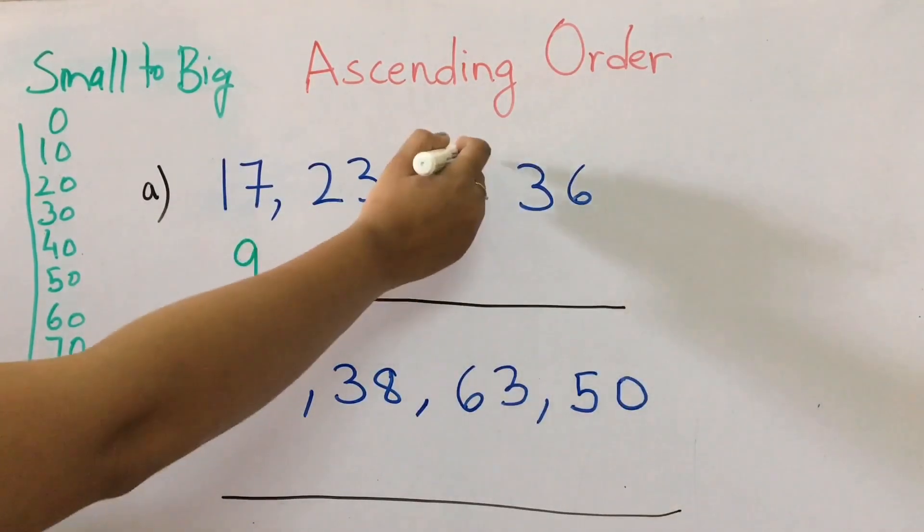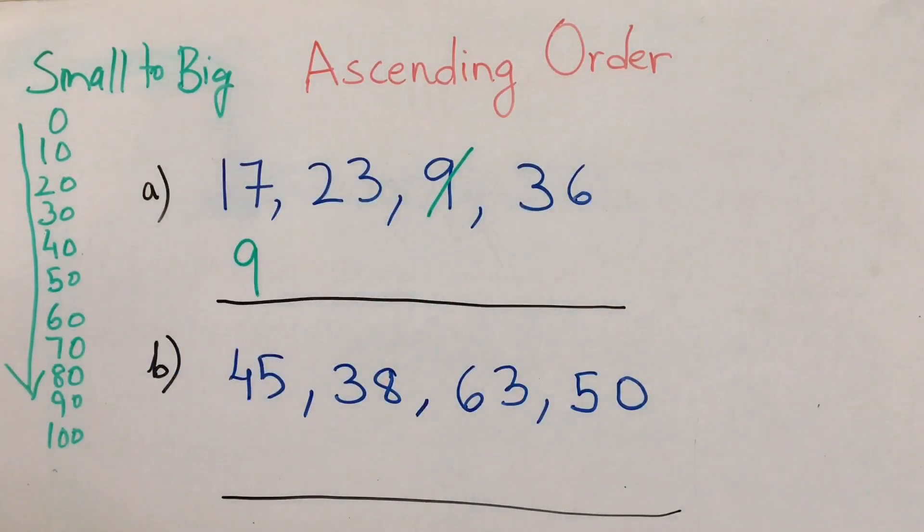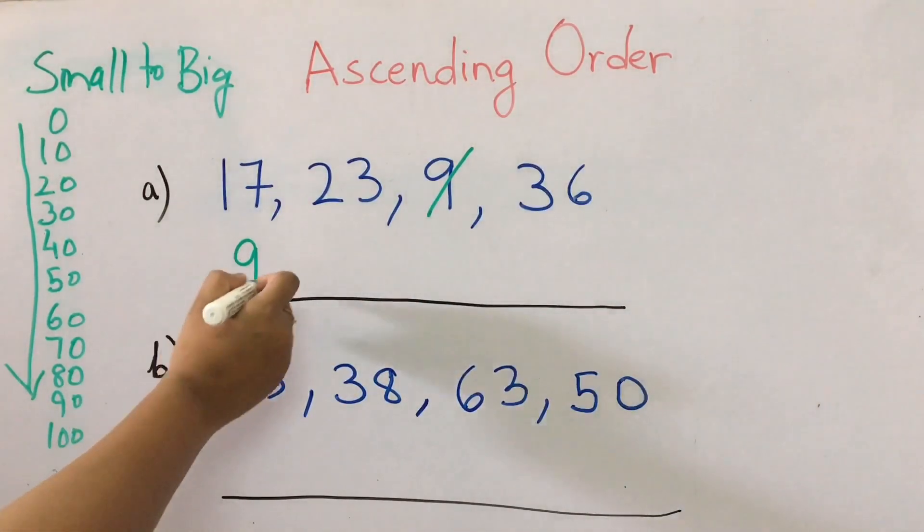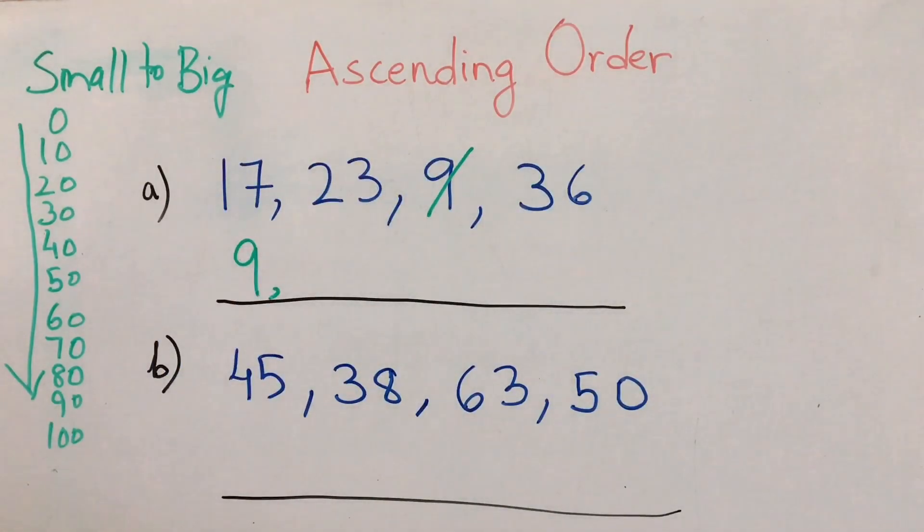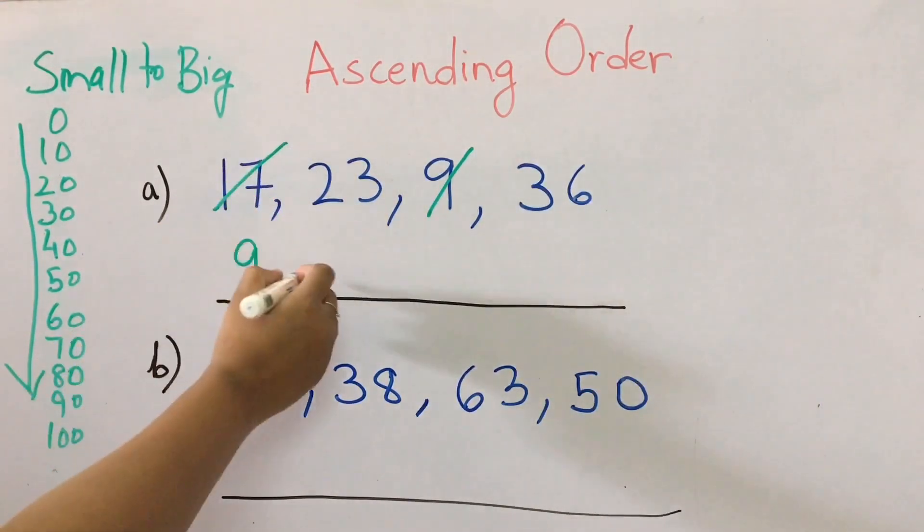Then we have 17, 23, and 36. We'll see in the 10 to 20 range. Do we see any number? Yes, we see 17. 17 comes less than 20, so we'll cut this and we'll write 17 here.